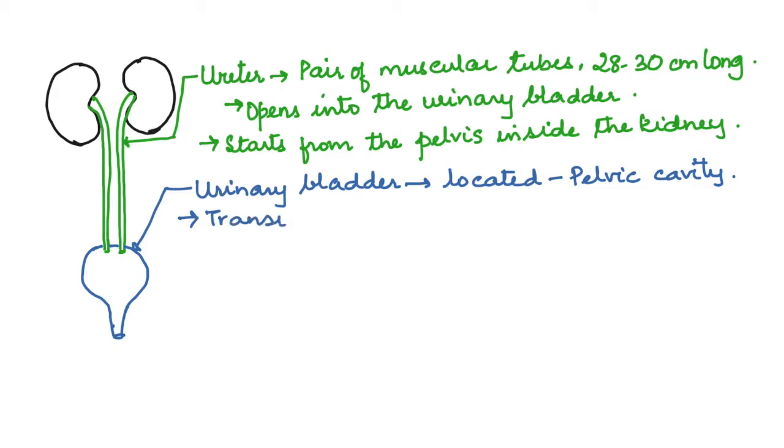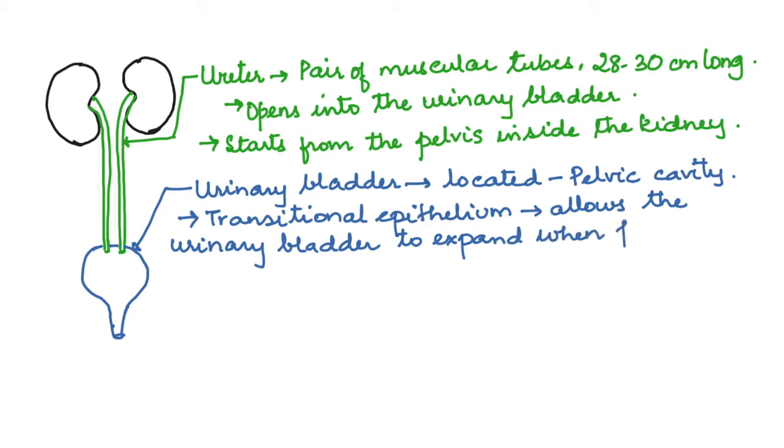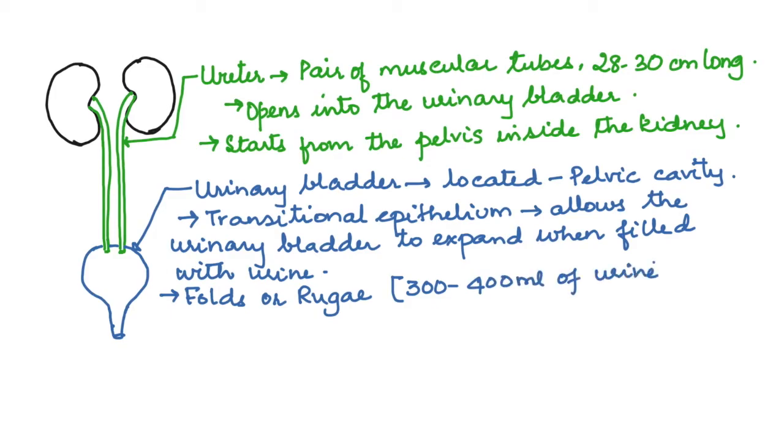This transitional epithelium allows the urinary bladder to expand when filled with urine. The transitional epithelium is specifically found only in the excretory system. Internally, the bladder shows the presence of folds called rugae and can accommodate about 300 to 400 ml of urine.